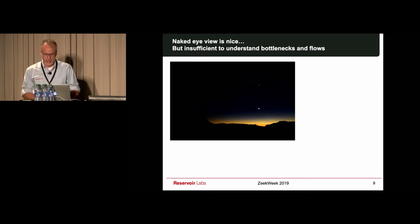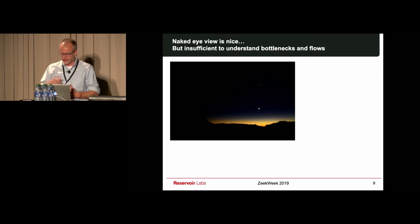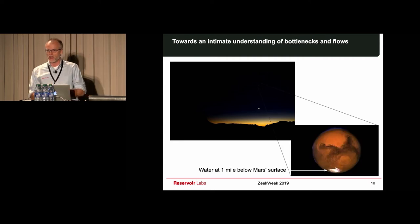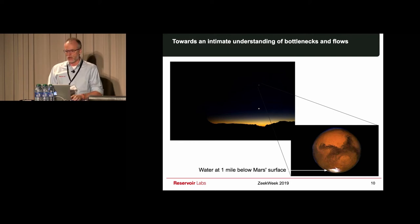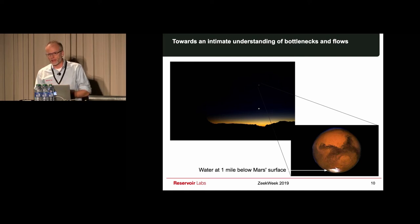That's the kind of problem that grading graph analytics can actually tackle based on the bottleneck structure of the network. Another way to think about the problem is, if you walk out at night on a clear sky and look up, you might be able to see Venus or Mars, but you're not going to be able to tell much of the detail. Using technology, you can actually start zooming in and tell things like there is actually water at one mile below the Mars surface. That is the vision behind grading graph analytics, gaining an intimate knowledge of bottlenecks and flows.